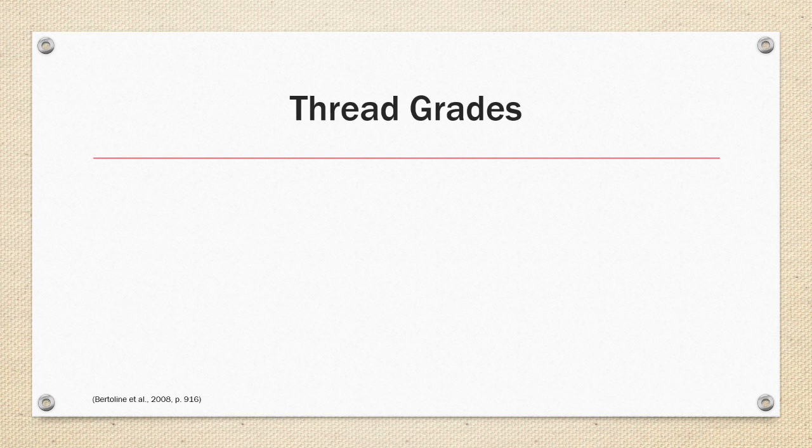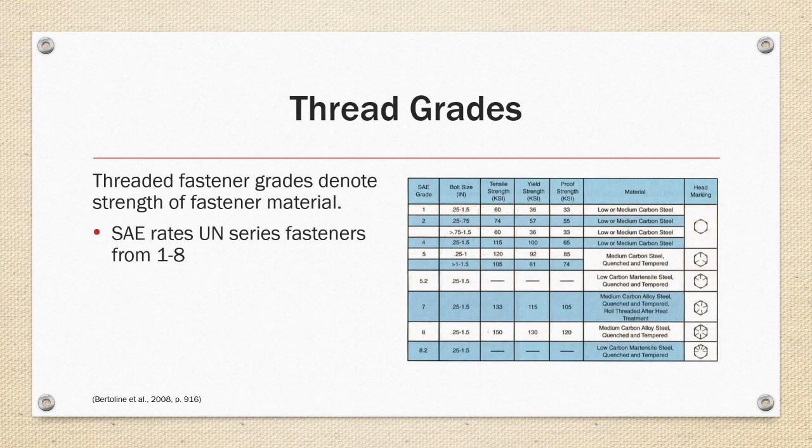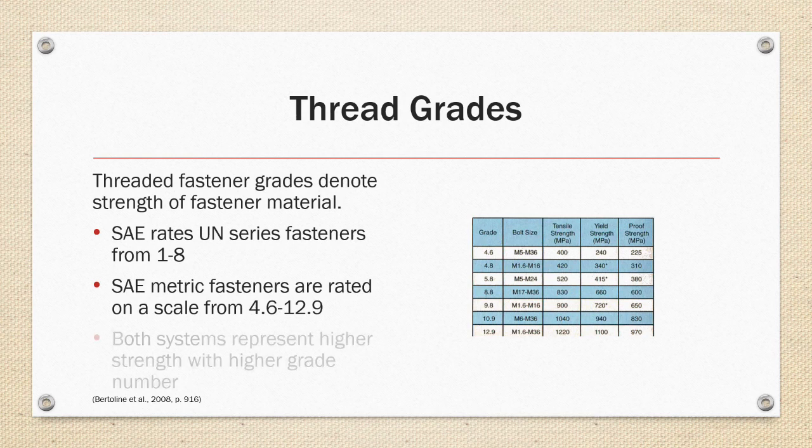Thread grades. Threaded fastener grades denote the strength of the fastener material. SAE rates UN series fasteners from one to eight. SAE metric fasteners are rated on a scale from 4.6 to 12.9. Both systems represent higher strength with higher grade numbers.